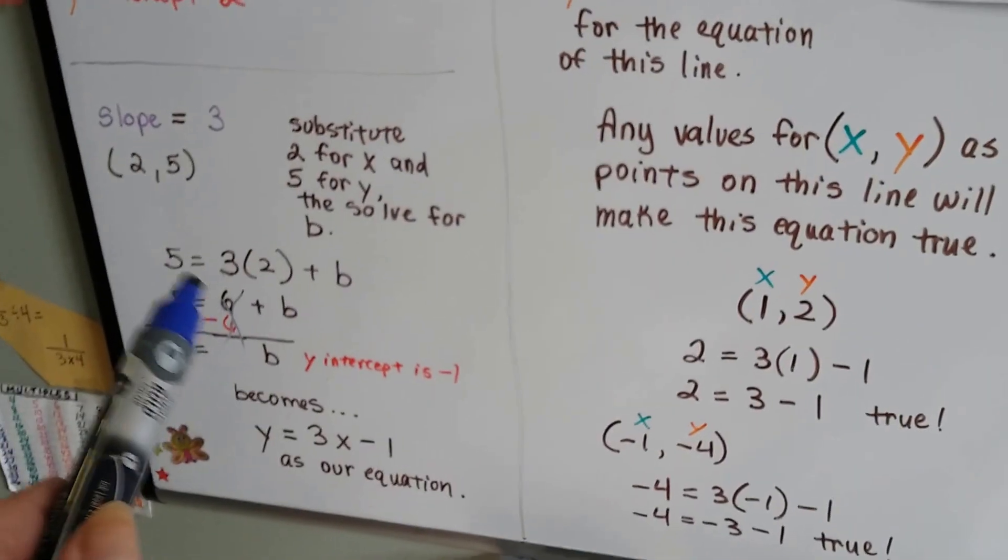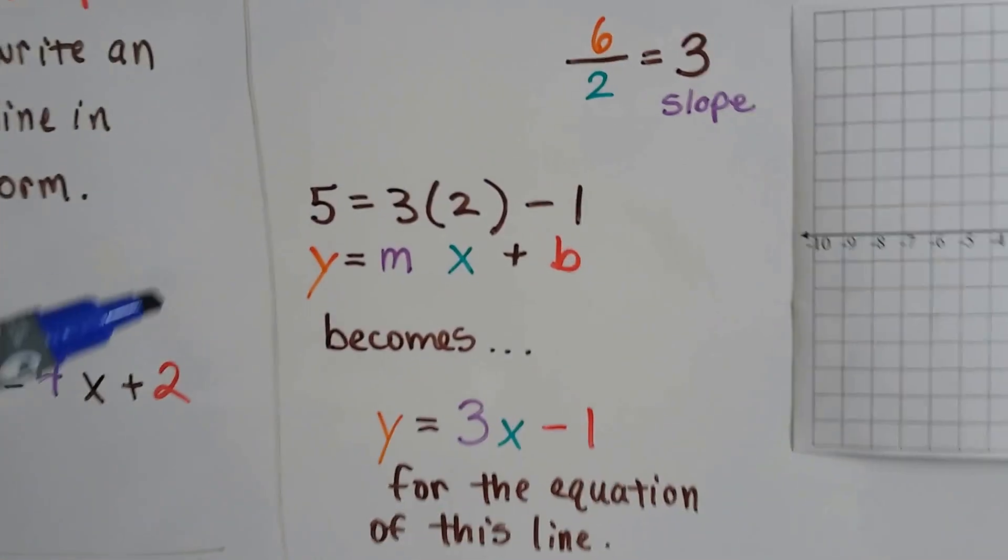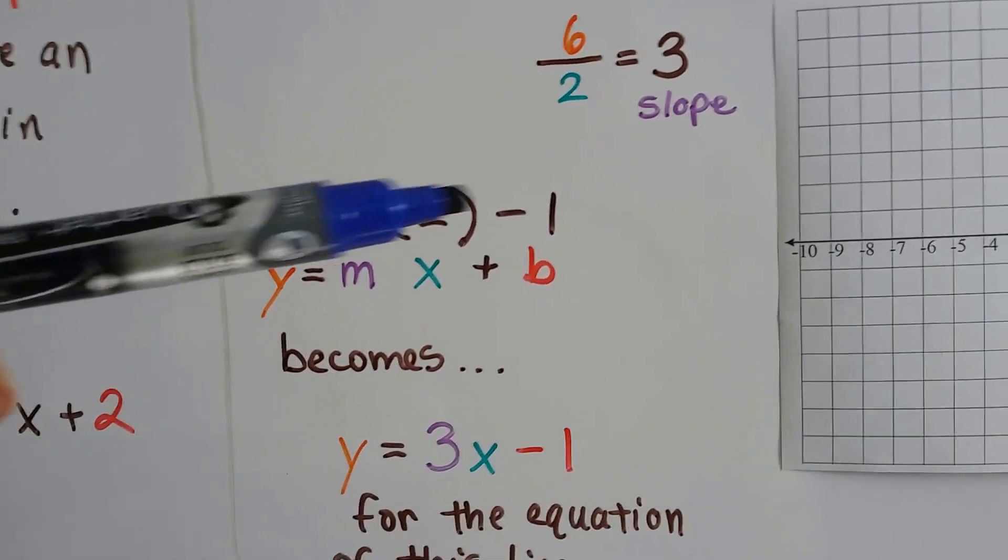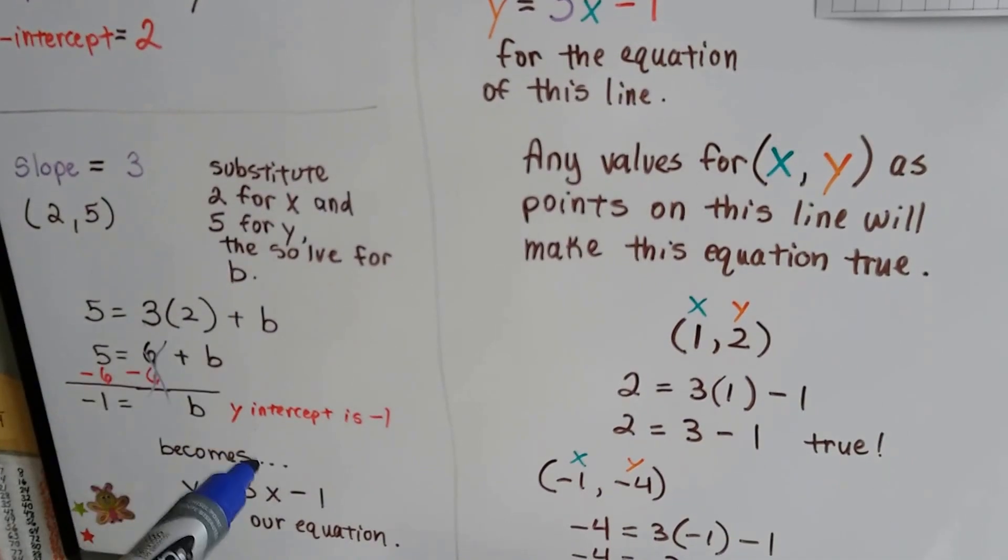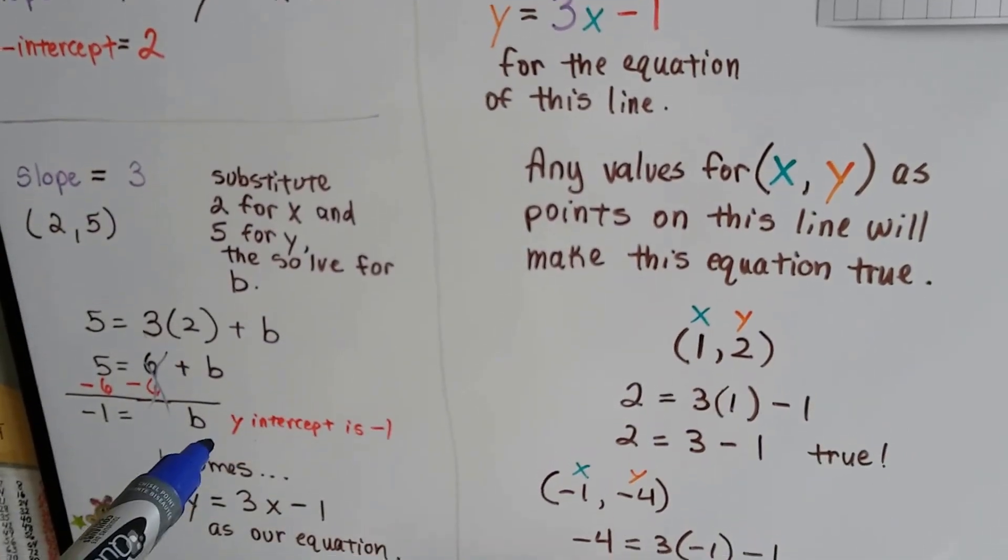So using this one, we've got 5 equals 3 times 2 minus 1. 5 equals 3 times 2, and we know our y-intercept is a negative 1.